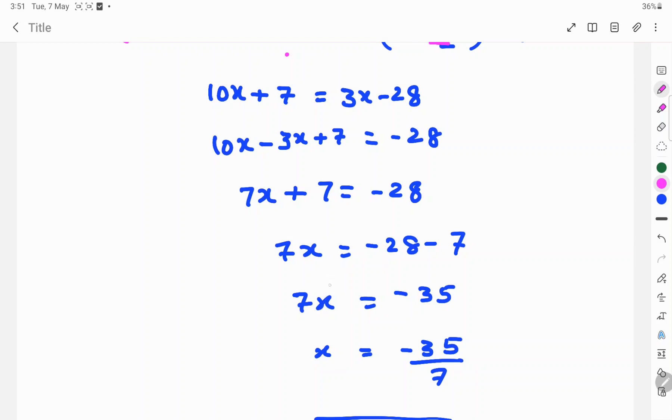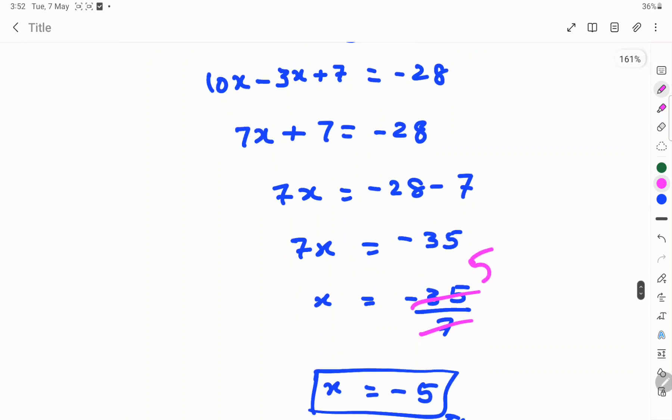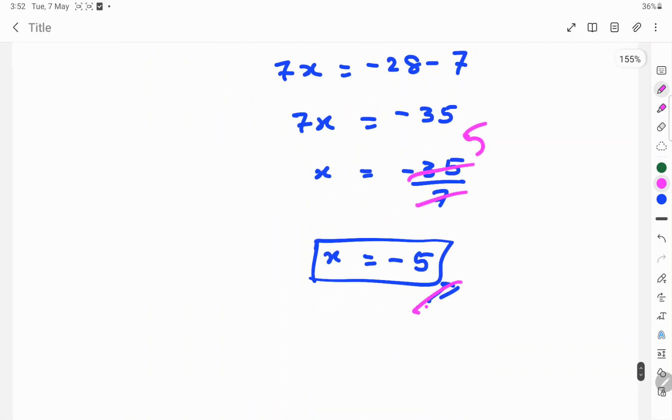This 7 change to left hand side, then divide the number. So, minus 35 by 7. 7 cancels 35 in 5 times. So, x equals minus 5. This is the solution.